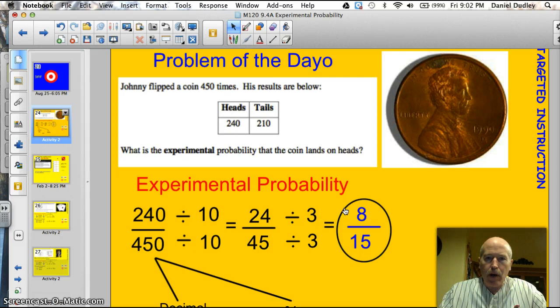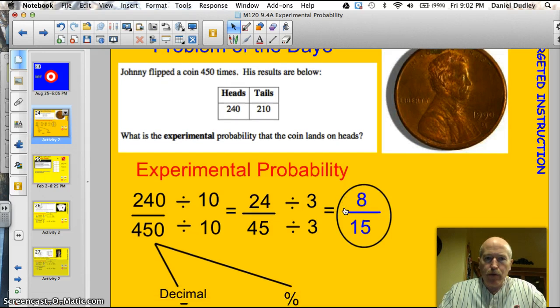All right, here's the problem of the day. Johnny flipped a coin 450 times. His results are below. So he had 240 heads and 210 tails. Now we kind of know that theoretically he should have had 225 and 225. It should have been exactly half, right? But that's the difference between theoretical probability and experimental probability. What's supposed to happen doesn't always happen perfectly.